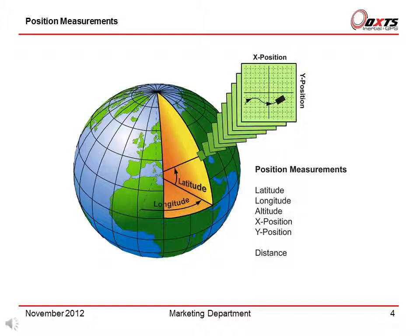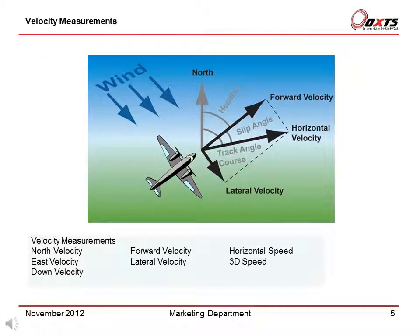The RT also integrates the horizontal velocity to give a distance measurement; this measurement always increases. We shall now look at the velocity measurements. The RT measures velocity in, for example, the north, east, down, and forward lateral velocity directions.